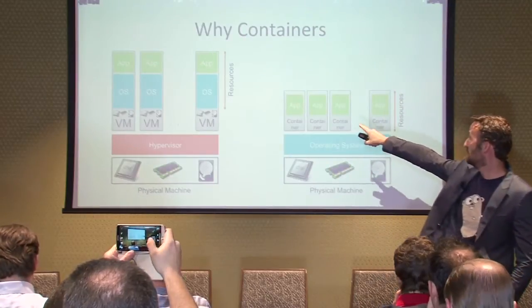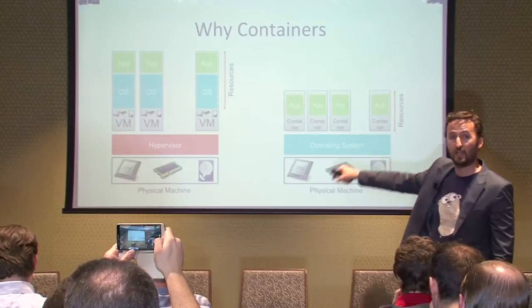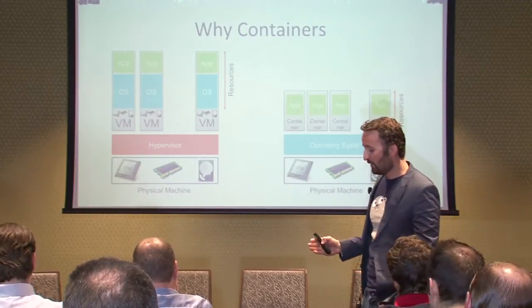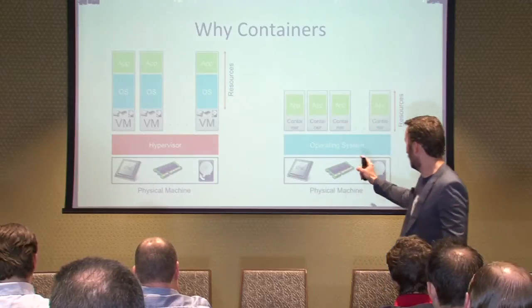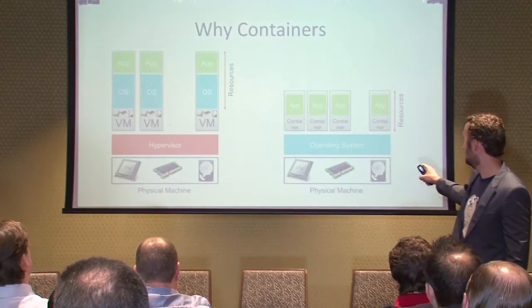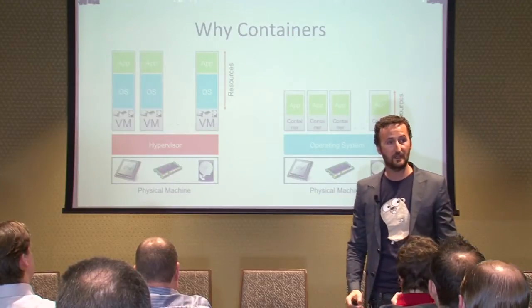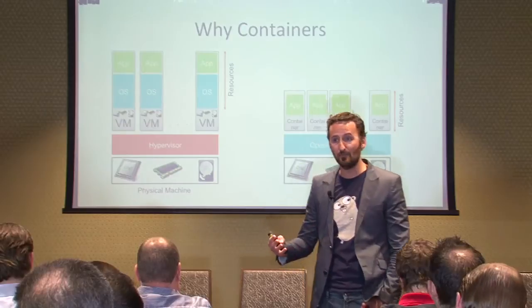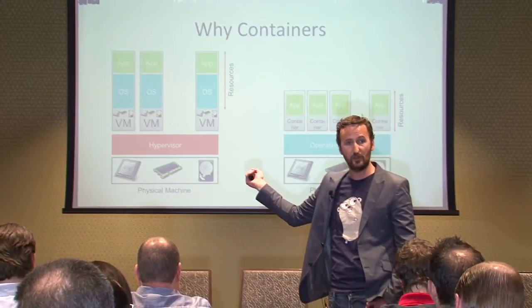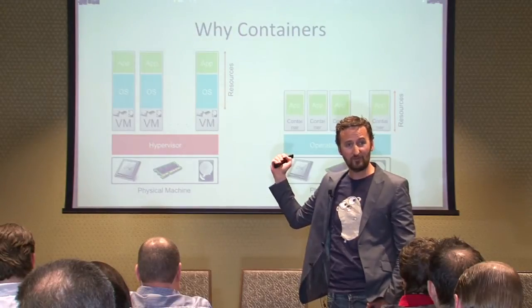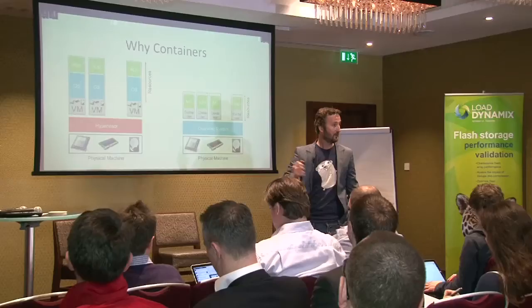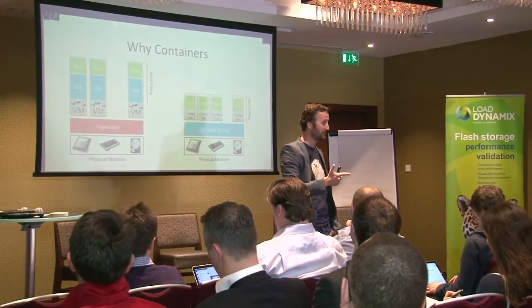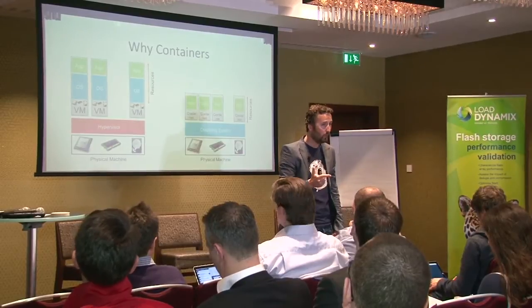In the container model, we squeeze the operating system down to become the shared resource. By doing that, we've only got one times the CPU, one times the physical RAM, and one times the storage space that Linux needs. We've got one app, one installation of Linux to install, potentially to license, and to patch. What enterprise doesn't want that? It means that instead of 20 virtual machines each with an application, we can probably have 50 or 100 containers running each with an app inside them — less physical servers to buy, less to manage and own.